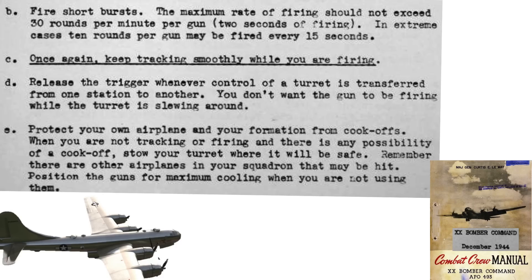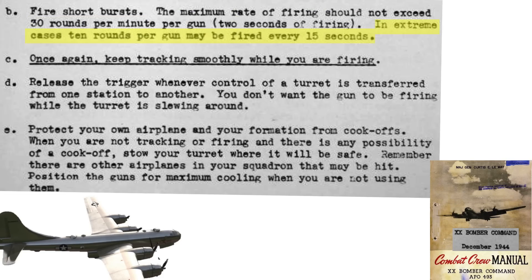This page defines the rounds per burst for the B-29 turret gunners, which maximizes the number of rounds fired while keeping barrel heating under control and maintaining adequate dispersion. All of the B-29 machine guns are mounted in power turrets. B-29 turret gunners were instructed to fire short bursts, not to exceed 30 rounds per gun per minute — 30 rounds equates to 2.3 seconds of fire. When conditions dictate, 10 rounds can be fired every 15 seconds. Point the guns in a safe direction to protect from cartridge cook-off friendly fire strikes.